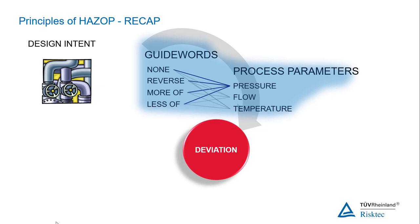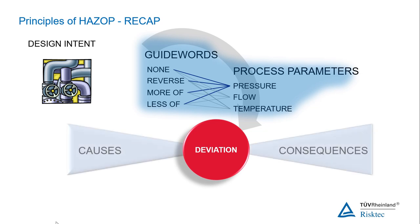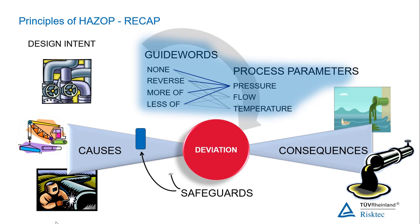Such deviations include no flow, high pressure, and low temperature. What could cause these particular deviations? Why would this particular situation exist? If the deviation is allowed to proceed, what would the consequences be? The consequence may be a threat to safety, health, environment, financial assets, or an obstacle to the smooth operation of the system.